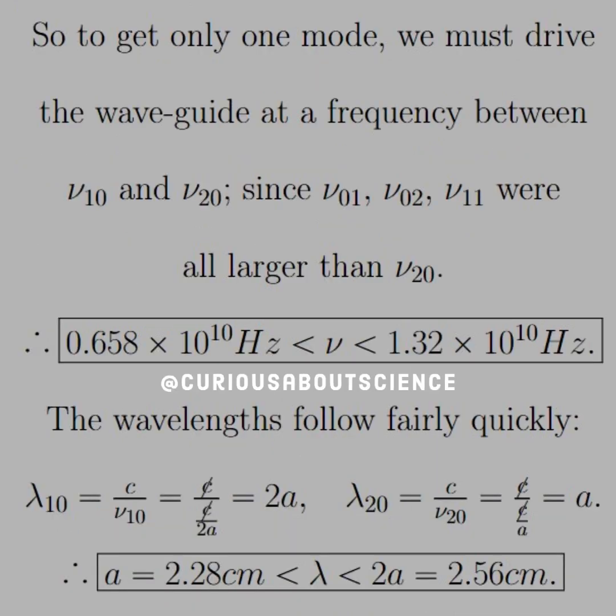To get only one mode, we must drive the waveguide at a frequency between ν₁₀ and ν₂₀, since ν₀₁, ν₀₂, and ν₁₁ were all larger than ν₂₀. ν₂₀ was 1.32, and we had ν₁₀ which was 0.658. All the numbers show that we have 1.49 and 1.62, so all of them are greater. We must drive the waveguide at a frequency between the two. We have a range of frequency between 0.658 and 1.32 times 10¹⁰ hertz.